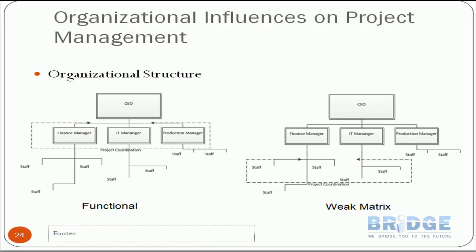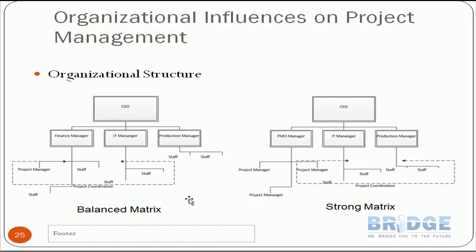Let's move on to the balanced matrix, a better structure. Here we pick an experienced person from a department, officially assign them as project manager, and ask them to work full-time on the project until it ends — after which they return to their daily operations. This gives us a dedicated project manager with a clear line of responsibility and some authority to make proper decisions.